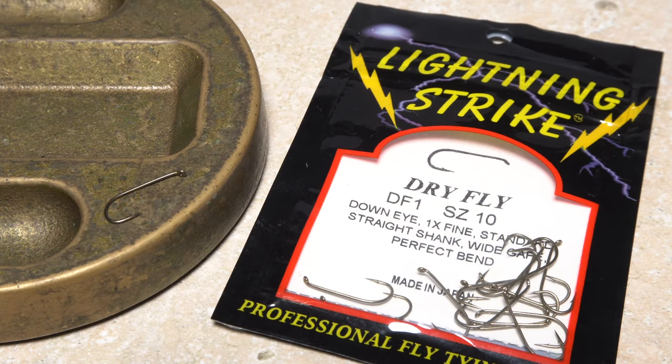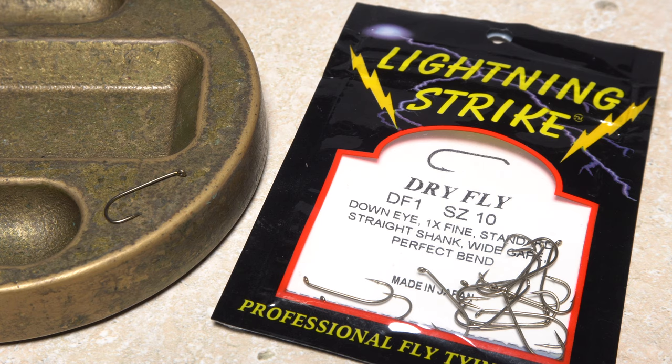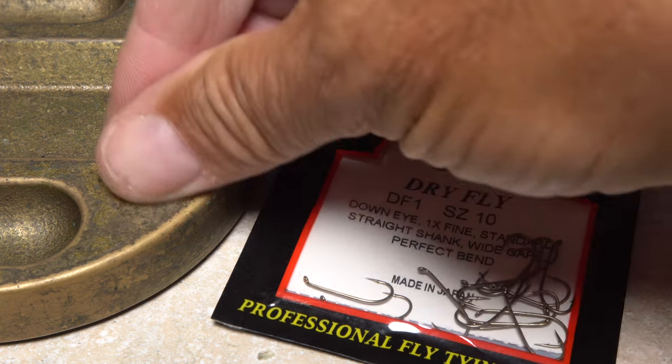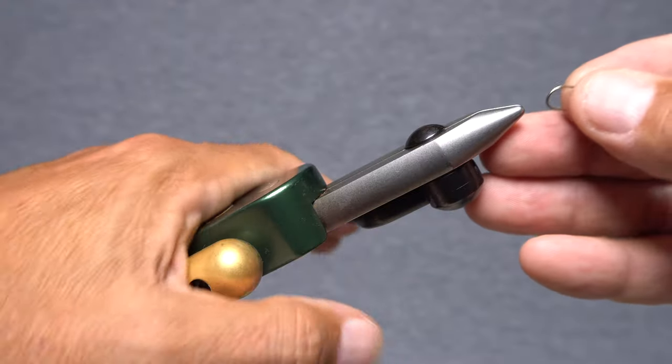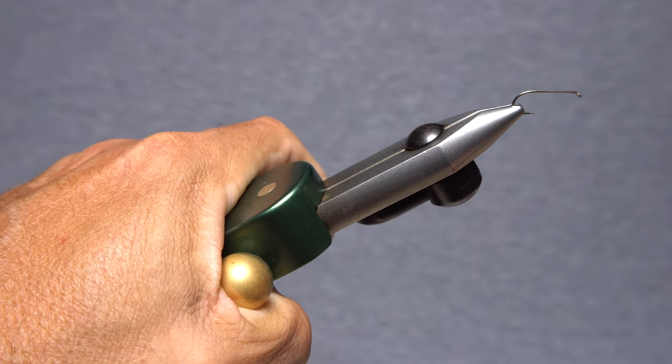This Isonychia version starts with a nice big size 10 lightning strike DF1 dry fly hook. Make sure to get the hook firmly secured in the jaws of your tying vise.